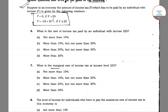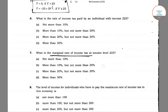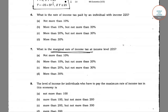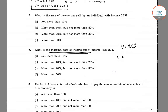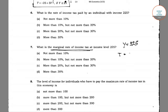So, marginal rate of income tax — let's see how to solve. Income is 225, and to find the marginal rate of income tax, we have to differentiate the given formula of t, that is t equals minus 25 plus 5 into y to the power half.